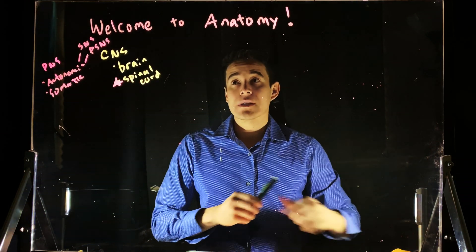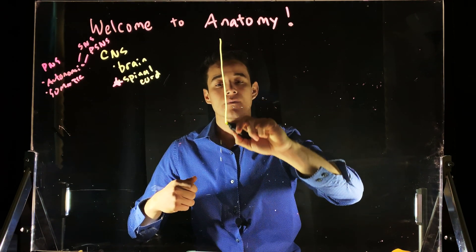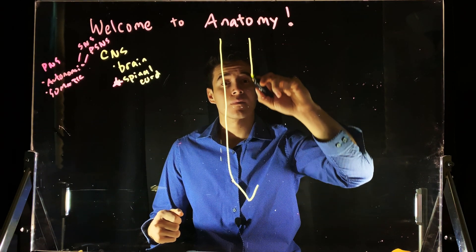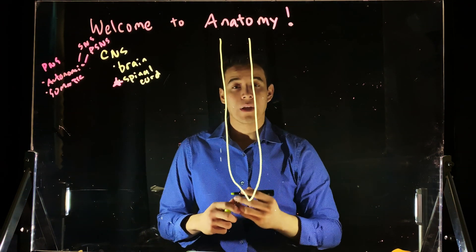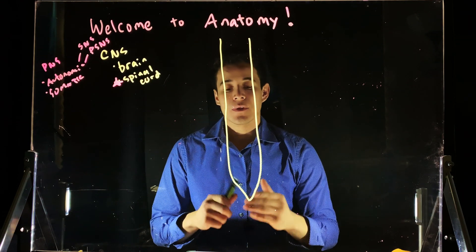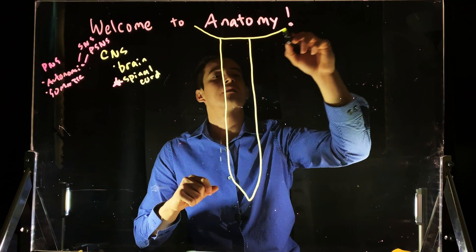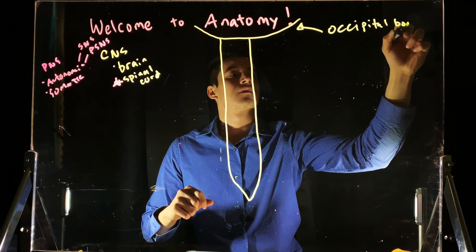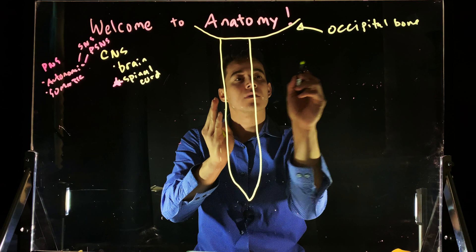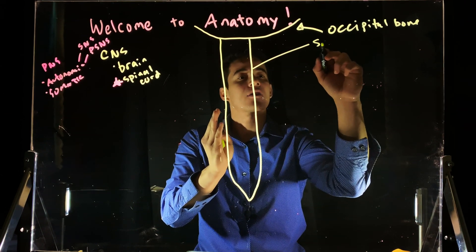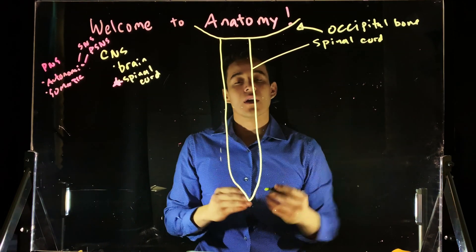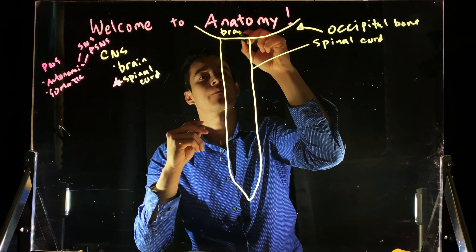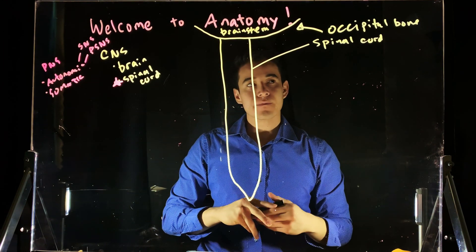I'm going to draw the spinal cord for us. Now, you'll notice up here we're going to say this is the occipital bone. The spinal cord derives from the occipital bone, and in the occipital bone we have the brain stem.